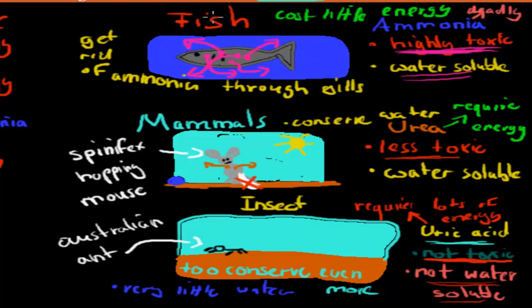So hopefully that makes sense. You need to be able to know the spinifex hopping mouse and Australian ant example, and why they produce uric acid, ammonia, or urea, and how that's related to the dry environment they live in or the wet environment in the case of the fish. Hopefully that was helpful.